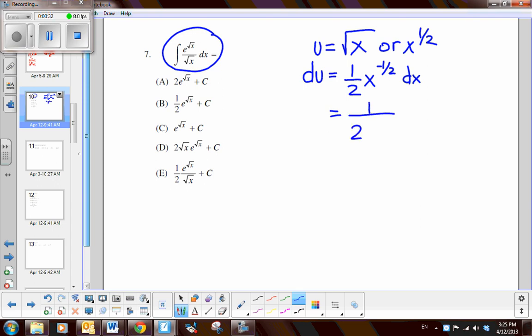So it's 1 over 2 square root of x dx. Now if I look back at the original integrand, notice I just want it to be 1 square root of x, not 1 half. So if I multiply both sides by 2, I get 2 du equals 1 over the square root of x dx. So now using this fact and this fact, I can make a substitution.